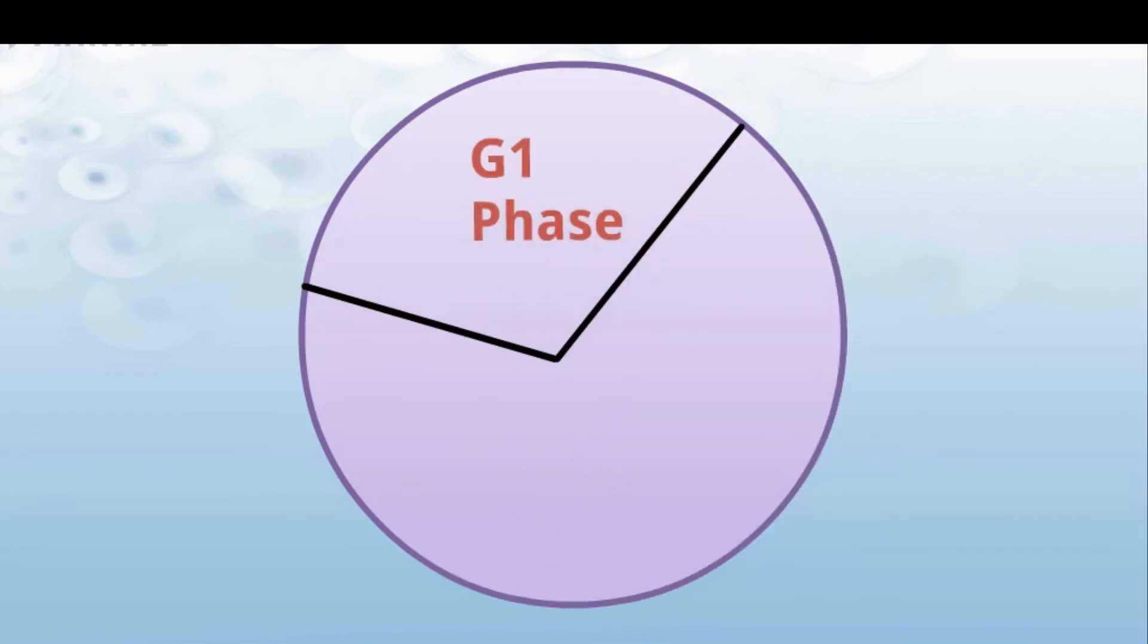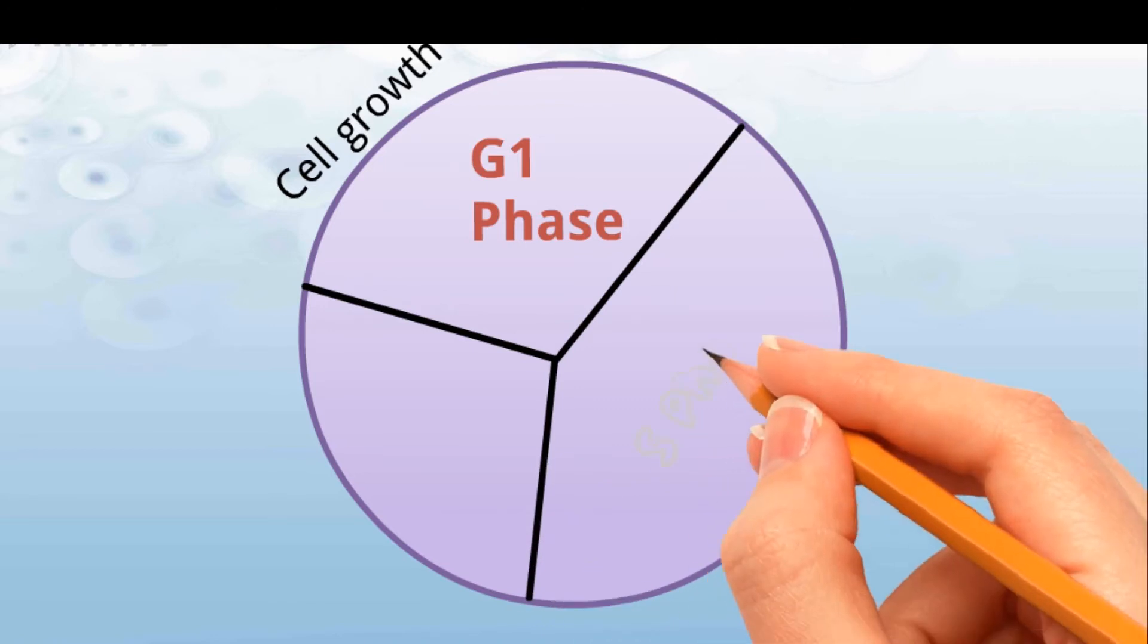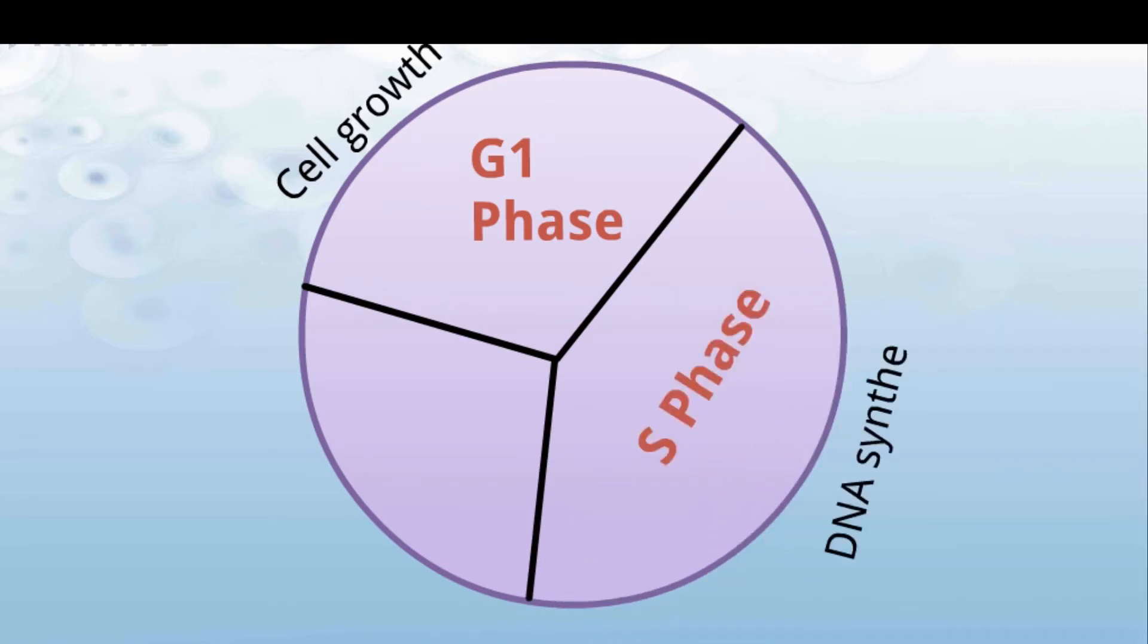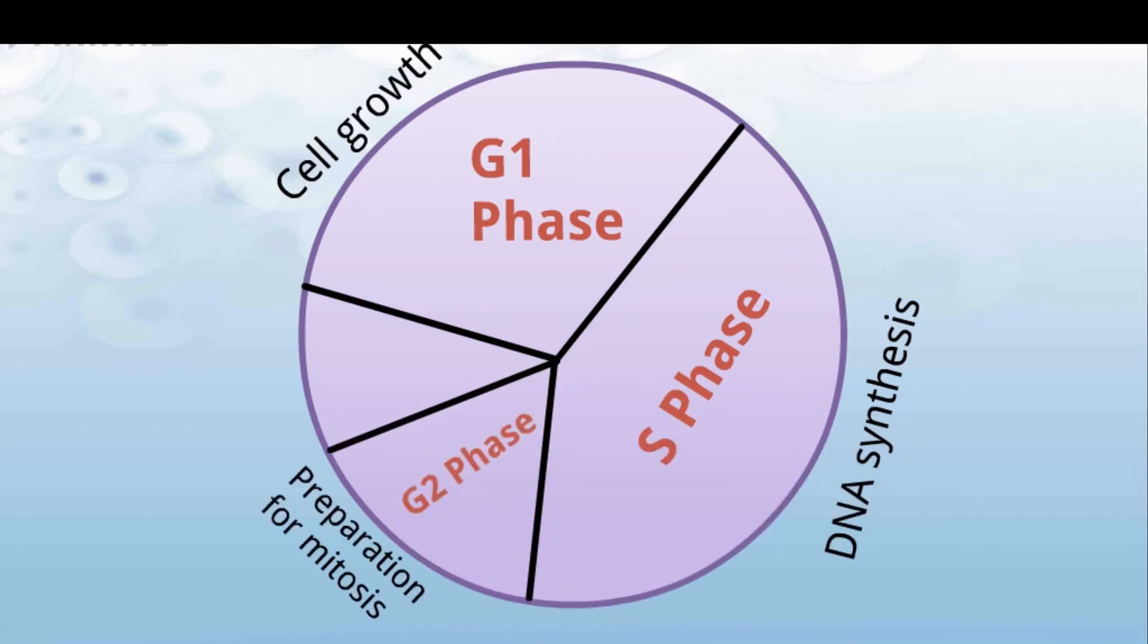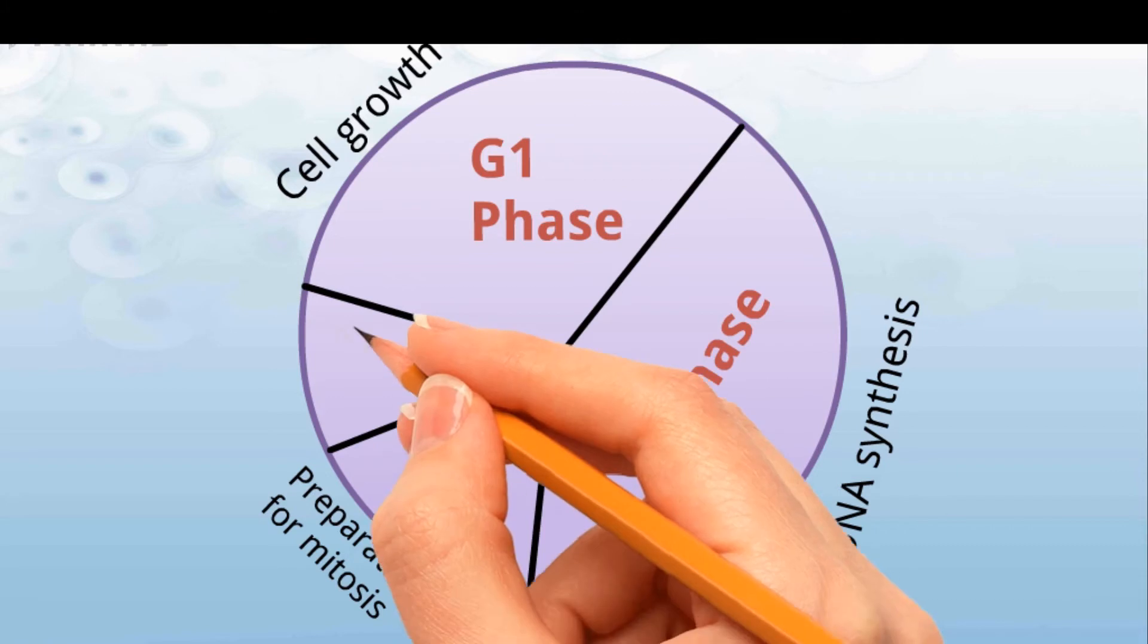G1 phase: This is the growth period before the synthesis of DNA. S phase: This is the phase during which DNA synthesis takes place. G2 phase: This is the growth phase between the end of DNA synthesis and the beginning of prophase.